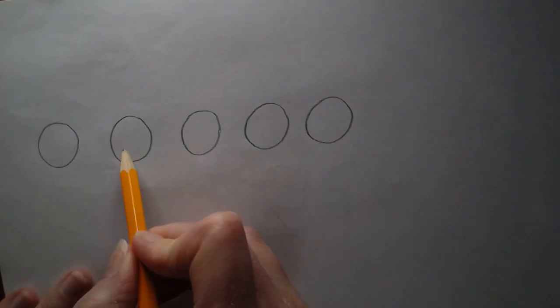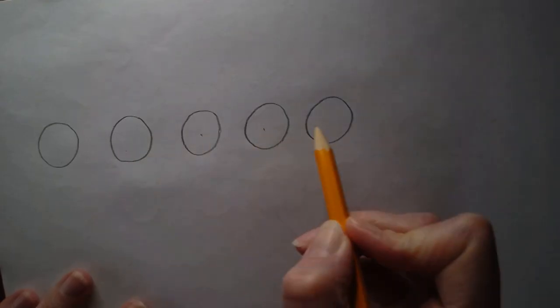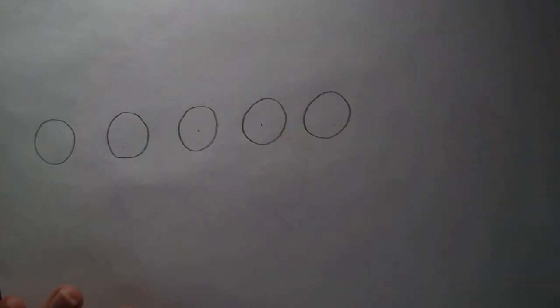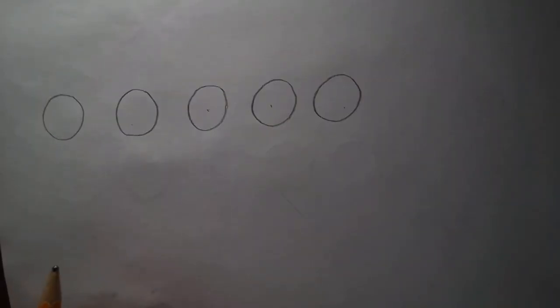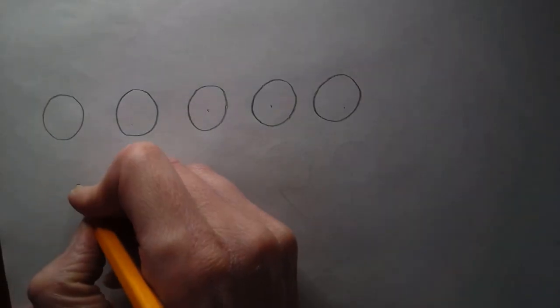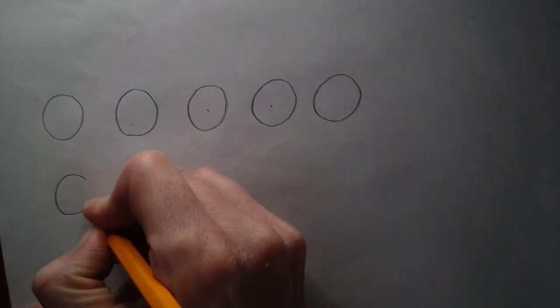Now I have got one, two, three, four, five circles. I am going to go back and check that. And then guess what else? I'm going to go ahead and I'm going to put another row of five circles right below.